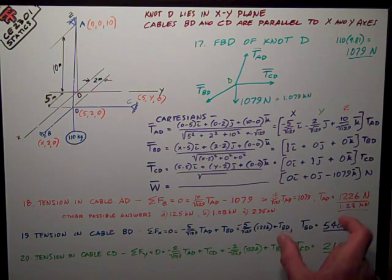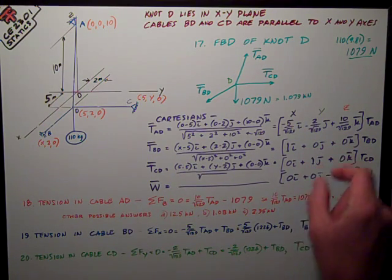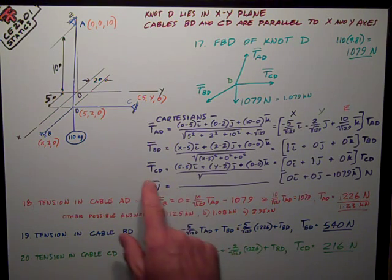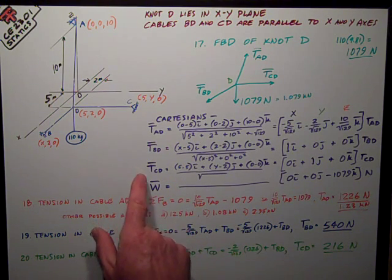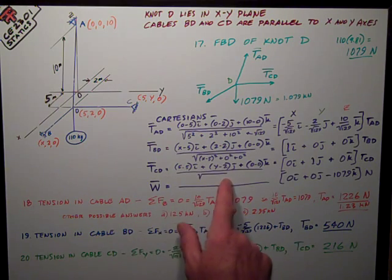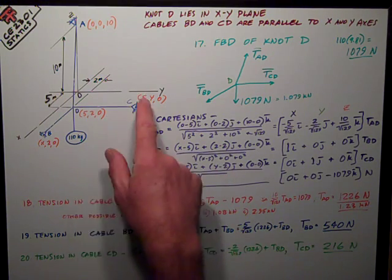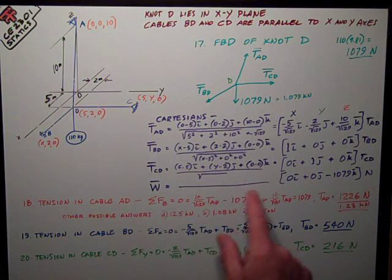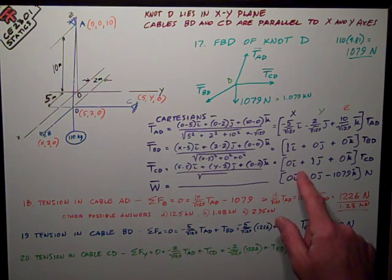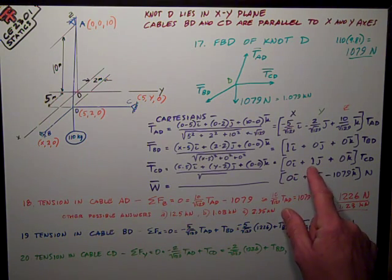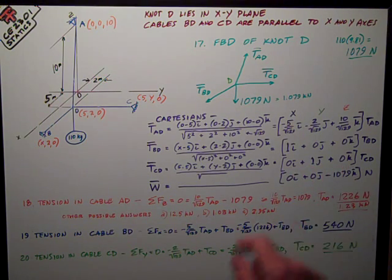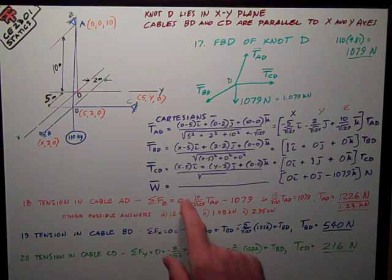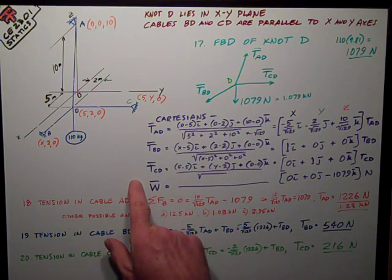Remember, I like to write them all one above each other, sort of in columns, so I can kind of see my results. Do the same thing for TCD, except it's got a, it's 5 minus 5, y minus 2 for j, 0 minus 0, all that stuff, and it ends up being 0i plus 1j plus 0k times TCD.